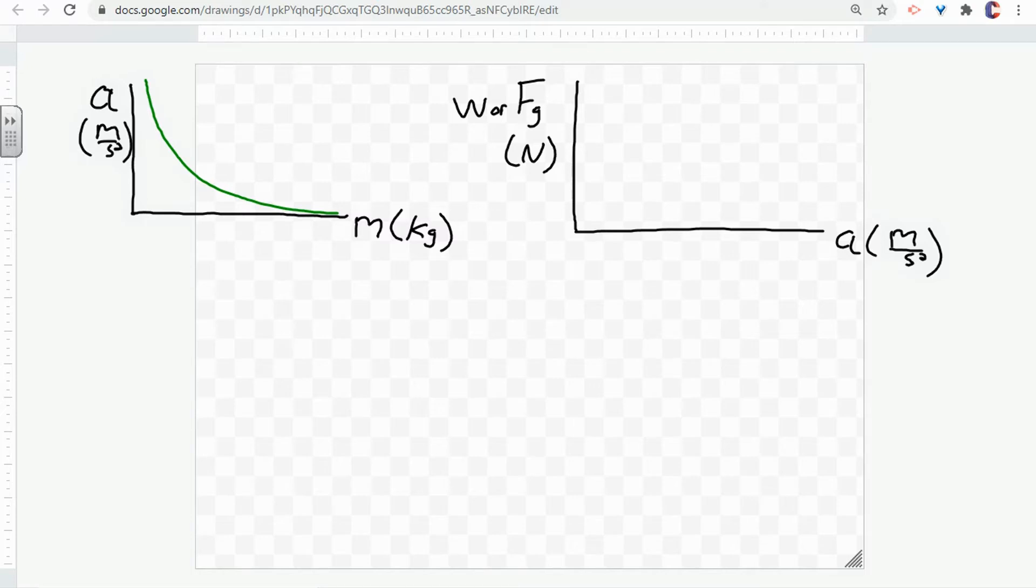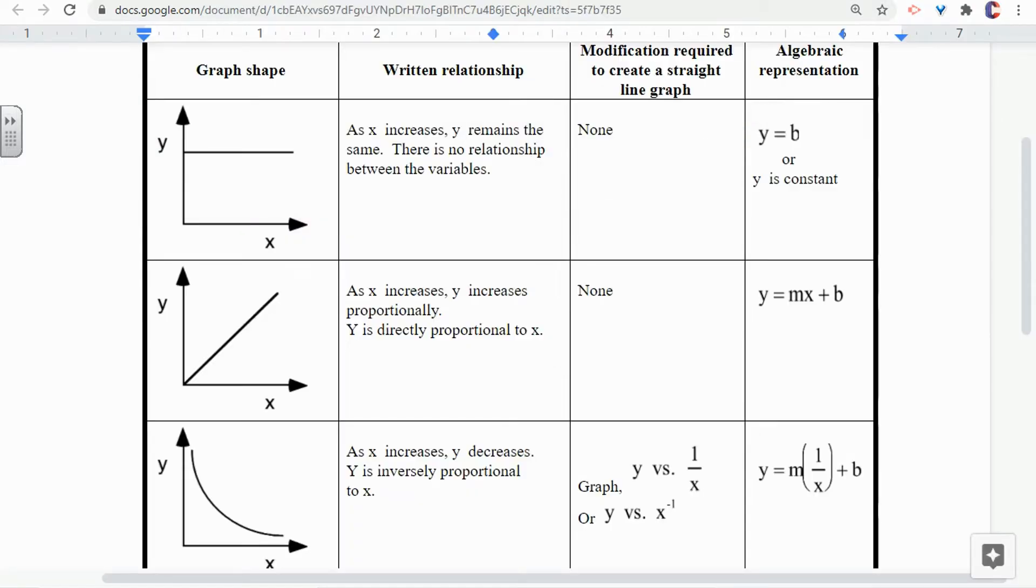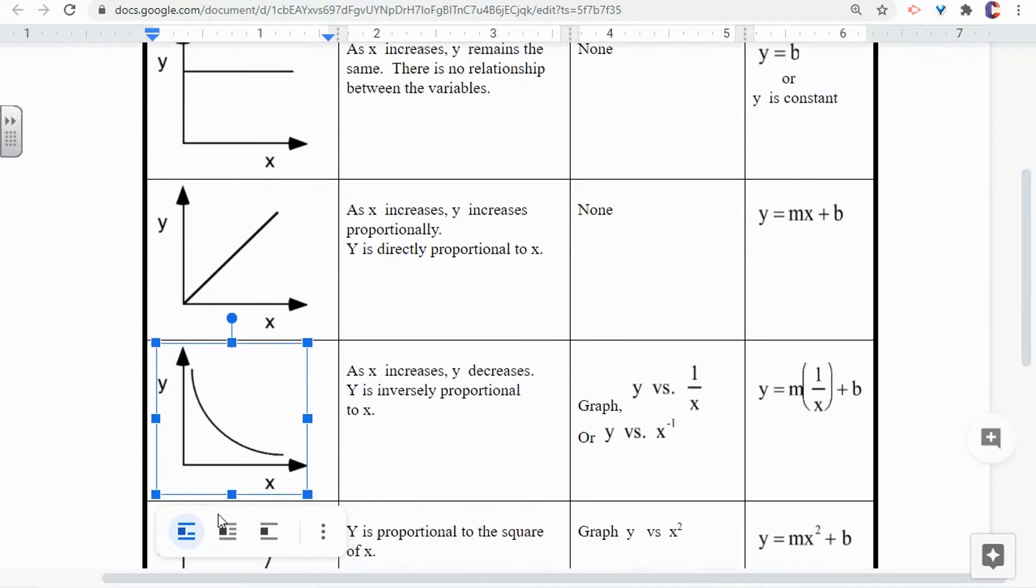And the shape of the graph for weight versus acceleration was a direct relationship. So what we do is we go to our graphical method summary sheet, and you can see the graphical method summary sheet.